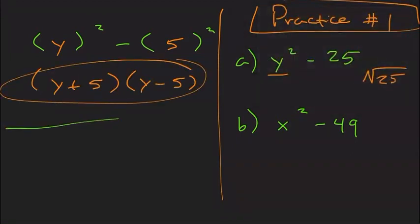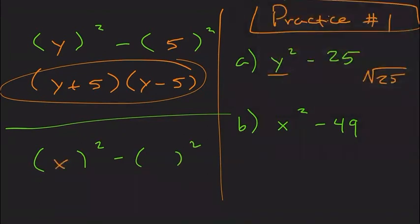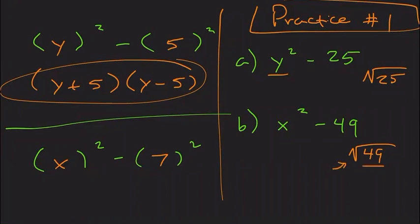Next one: we know it's going to be something squared minus something squared. The variable part is just x. Then what times itself gives us 49? The square root of 49 is 7 — that means what number times itself gives you that. So this becomes (x + 7) times (x − 7).